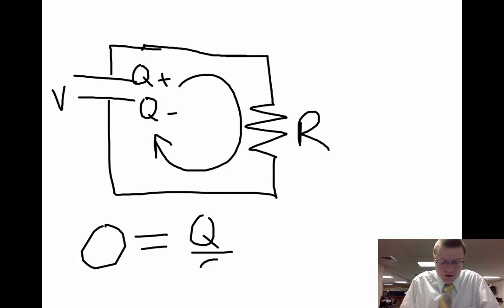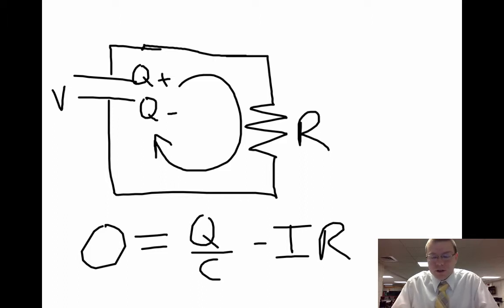So knowing Kirchhoff, we've got to set 0 equal to the voltage of the capacitor minus the voltage across the resistor. So it's going to be Q/C minus IR.